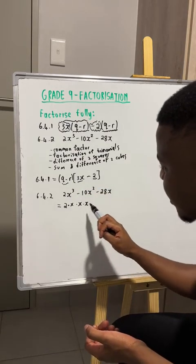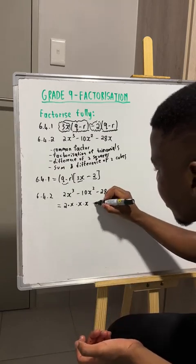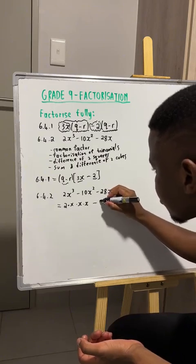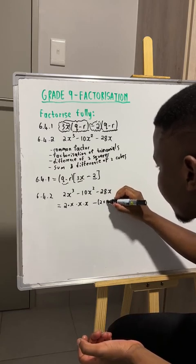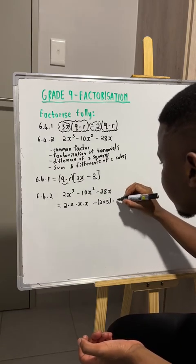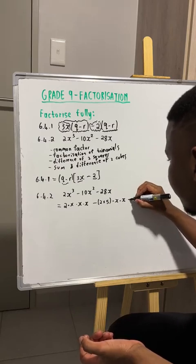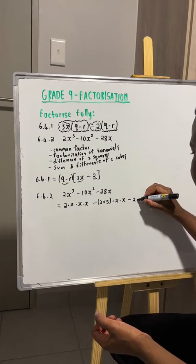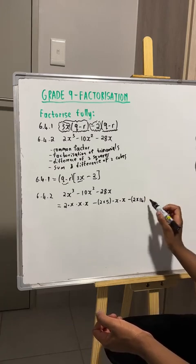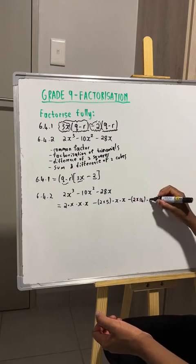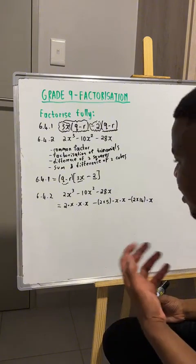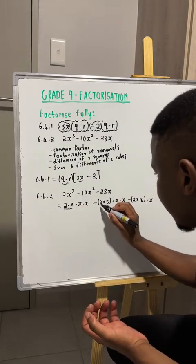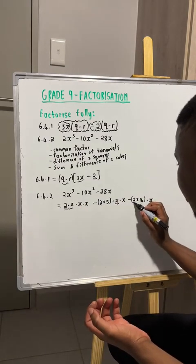So x to the power 3 is just three x's multiplying each other. We can write 10x squared as 2 multiplied by 5, and x squared is the same as x multiplied by x. And 28x is the same as 2 multiplied by 14 — because 2 times 14 is 28 — multiplied by x. This makes it easy to see what the common factor is. You can see that here we have a 2x, and we also have a 2x here, and a 2x here.